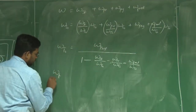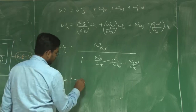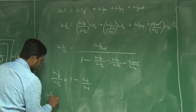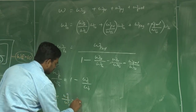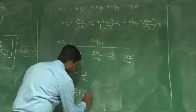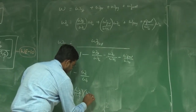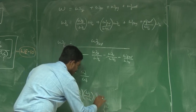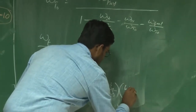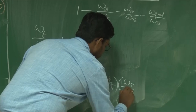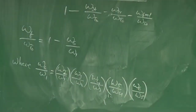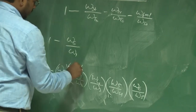We also derived that W_f / W_takeoff equals 1 minus W6/W1, where W6/W1 equals the product (W2/W1)(W3/W2)(W4/W3)(W5/W4). These are the weight ratios for various mission segments.